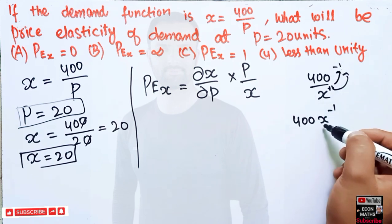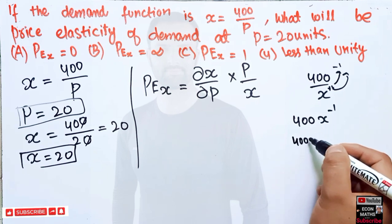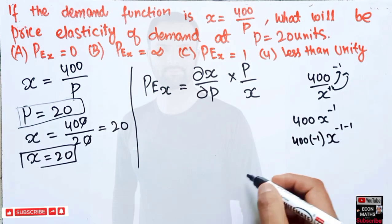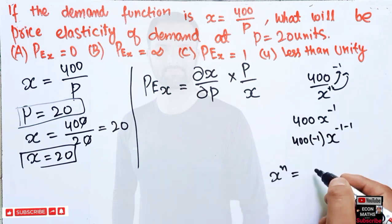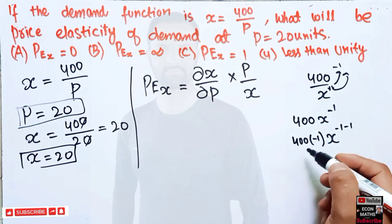Now, what is the derivative of x to the power minus 1? This minus 1 will become the coefficient. So we have 400 into minus 1x, and this exponent is subtracted by 1, by power function rule. If we have x to the power n, its derivative is simply n, x to the power n minus 1.